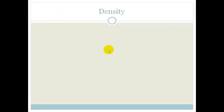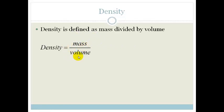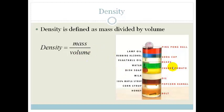Right, now let's look at our first trend across the periodic table. And let's look at density. Density is defined as mass divided by volume. In other words, we take the mass of the object and we divide it by the amount of space it takes up. And that gives us a measure of density.